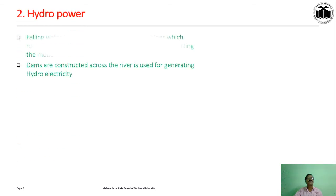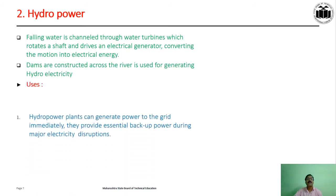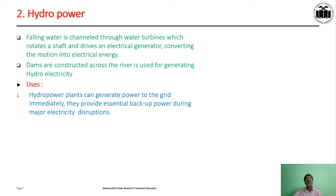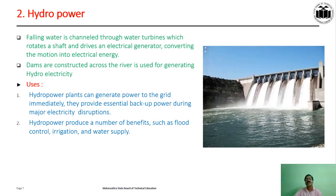Hydropower means running water. Flowing water is channelized through a water turbine, which rotates a shaft and drives an electrical generator, converting the motion into electrical energy. Dams are constructed across rivers and used for generating hydroelectricity. Uses of hydropower: hydropower plants can generate power to the grid immediately, provide essential backup power during major electricity disruptions, and produce benefits such as flood control, irrigation and water supply to cities or towns. This figure shows dams constructed across a river, and due to this hydraulic jump, electricity gets generated.